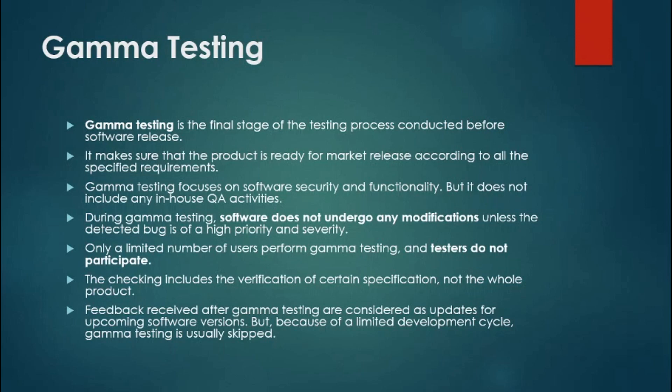Gamma testing is the final stage of the testing process, conducted just before software release. We perform this kind of testing to make sure the product is ready for market release. For example, consider an application that helps you book a bike ride — there are apps in the market like Vogo, Drive Easy, and Bounce.